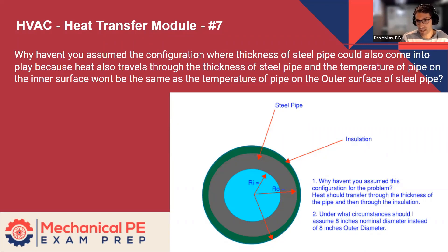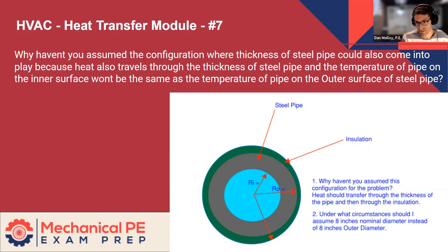That will be the last time you ever calculate it when you have water flowing in a metal pipe. That's why you're able to ignore it and jump straight to the insulation, which has tremendous insulating properties and is there for the very reason of providing resistance.